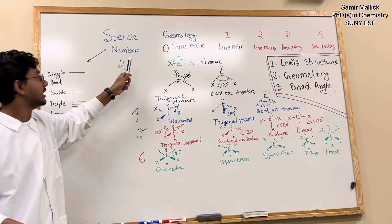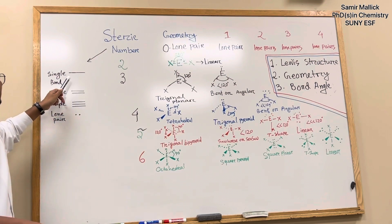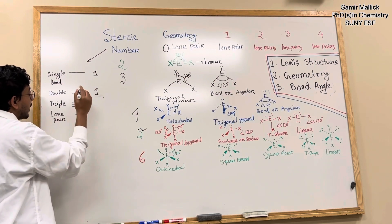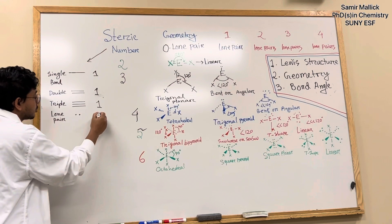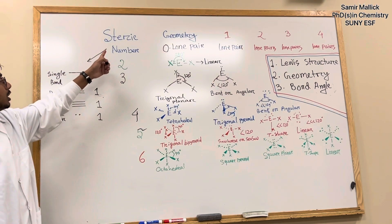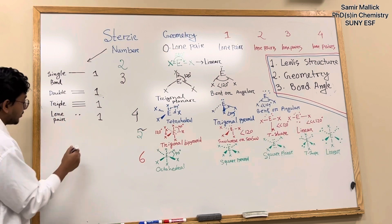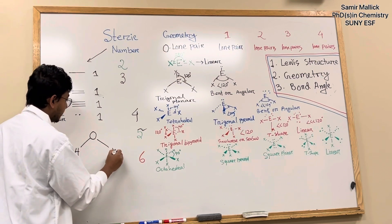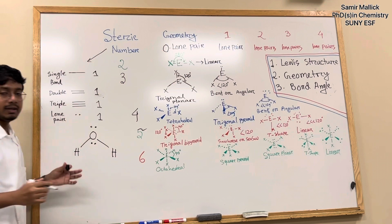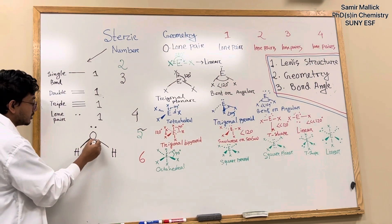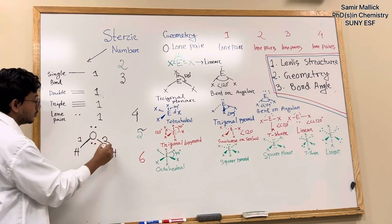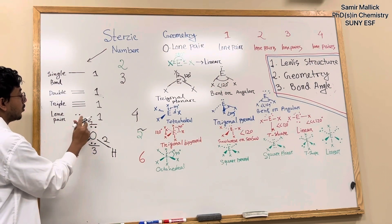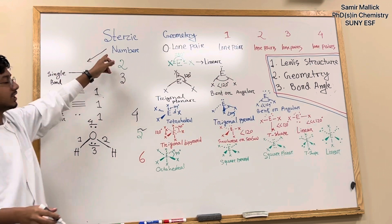To determine the steric number, you need to know that a single bond is counted as one and a double bond is also counted as one. A triple bond also counts as one and a lone pair also counts as one. For example, we already know the structure of the water molecule — it has two single bonds and two lone pairs, giving a total of four. So one, two, three, four — this number is the steric number.